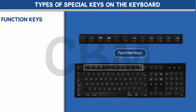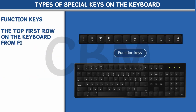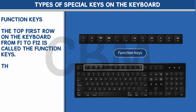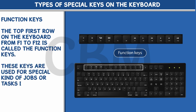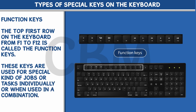Function Keys. The top first row on the keyboard from F1 to F12 is called the function keys. These keys are used for special kinds of jobs or tasks individually, or when used in a combination.